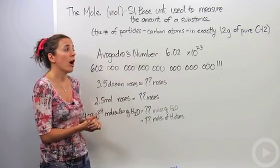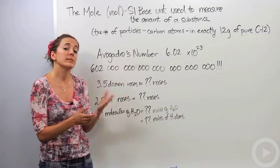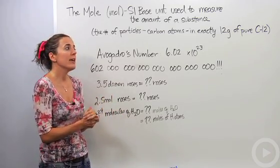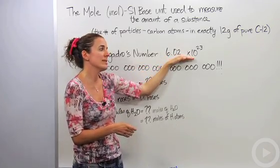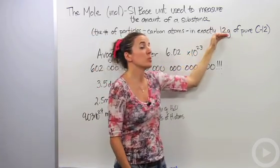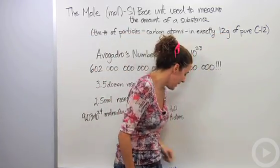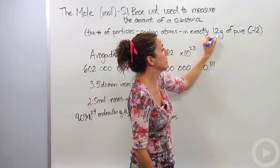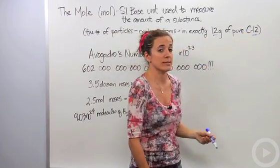And he actually found that carbon-12, meaning carbon with 6 protons and 6 neutrons, if he had 6.02 times 10 to the 23rd particles of C12, they actually happened to be 12 grams, which is amazing because these two numbers are the same. And I'll show you why that's so amazing in just a second.